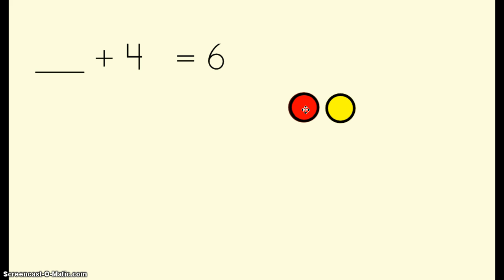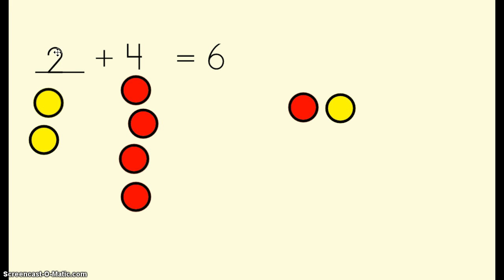I could solve this with counters. 1, 2, 3, 4, 5, 6. I know I had 4 counters already and I needed to figure out how many more counters I needed to get to our total of 6. I needed 2 more counters in my picture. So 2 is our unknown addend. 2 plus 4 equals 6.